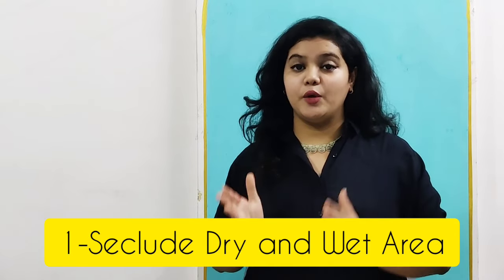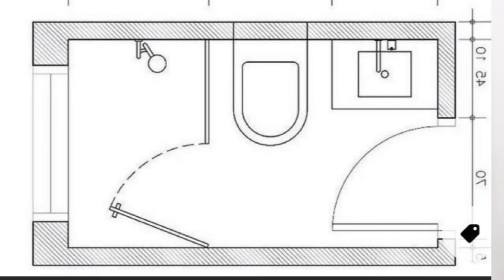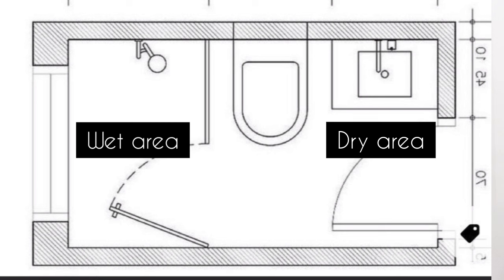Tip number one: seclude your dry area and your wet area. The dry area is where you have your WC and your wash basin, and the wet area is your shower cubicle or shower area. These two areas need to be segregated in the bathroom. Usually the builder doesn't segregate them, but it's very important to keep them separate. Otherwise, while you're taking a shower the entire bathroom gets wet and it's difficult to keep clean. Segregating both areas makes your bathroom neater, more organized, and better-looking.